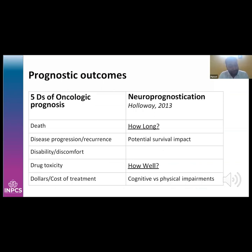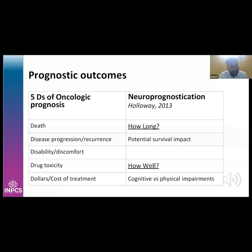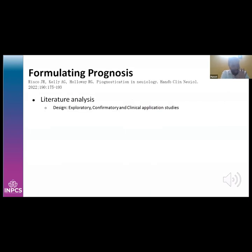The 5D model of prognostic outcomes used in oncology includes: disease progression or recurrence, death, disability (e.g., will I walk?), drug toxicity, and disease duration. In neuro prognostication we mainly focus on 'how long' (potential survival) and 'how well' (cognitive and physical impairment within normal limits and quality of life). To formulate any prognosis, a thorough literature analysis must be done.